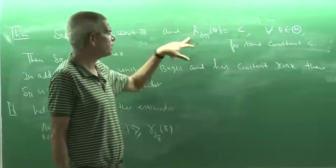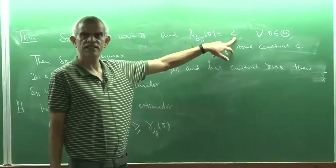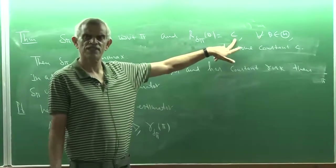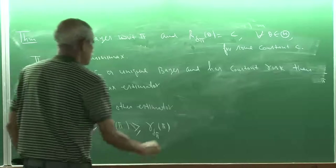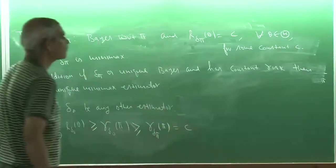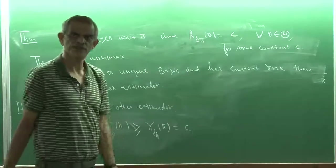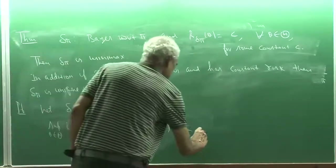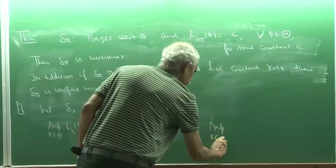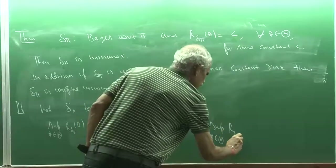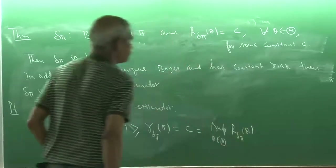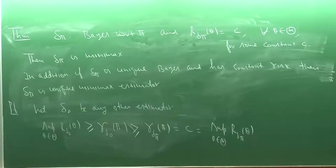But delta_pi has a constant risk C, so its Bayes risk is just the average of C, which equals C. And since the risk is constant at C, its supremum is also C — that is, sup_theta R(delta_pi, theta) = C. This proves that delta_pi is Minimax, because for any arbitrary estimator delta naught, its supremum risk is always greater than or equal to the supremum risk of delta_pi.